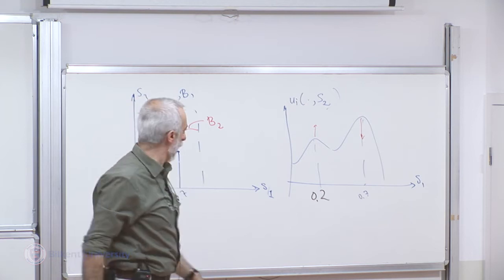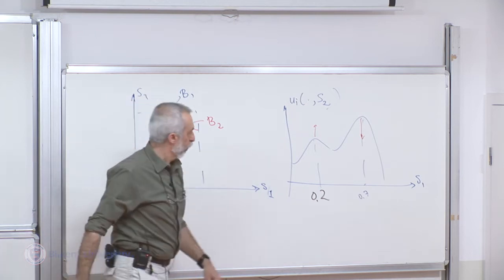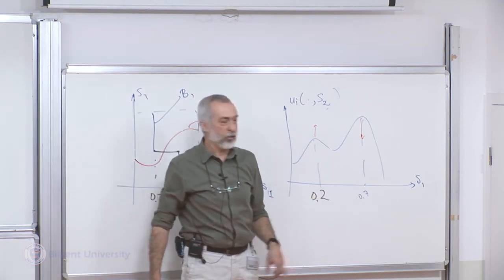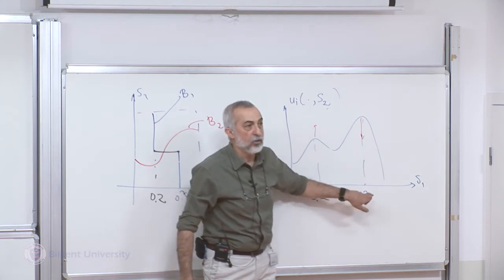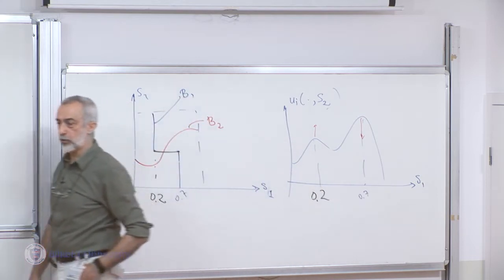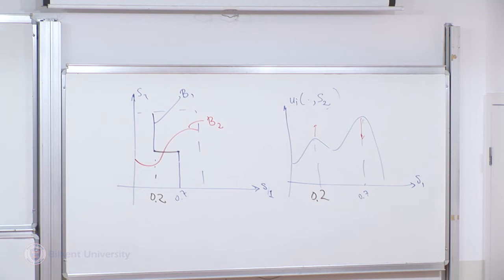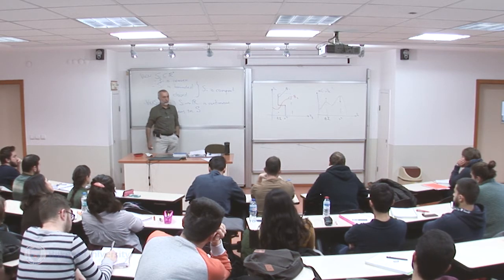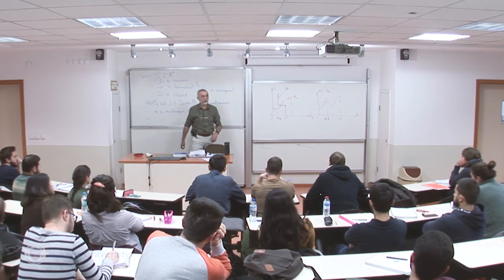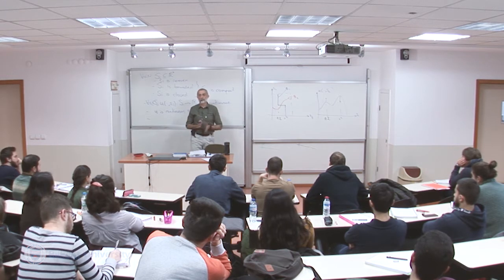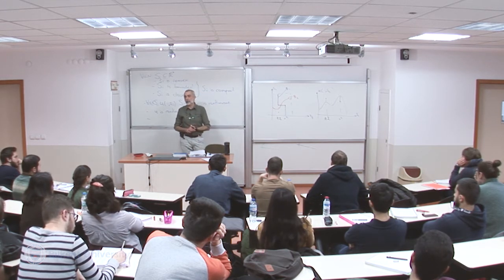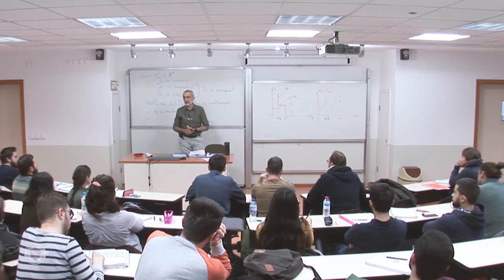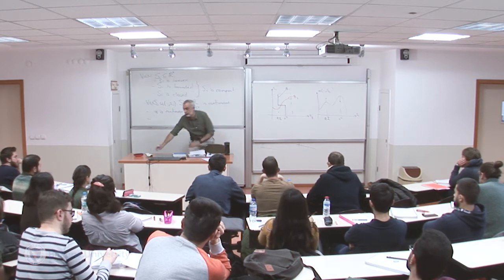So how can I make sure that whenever 0.2 is a best response and 0.7 is a best response, anything between 0.2 and 0.7 is also a best response? Does anybody remember a condition from calculus or math economics that guarantees such situations? Quasi-concavity! Exactly — quasi-concavity.